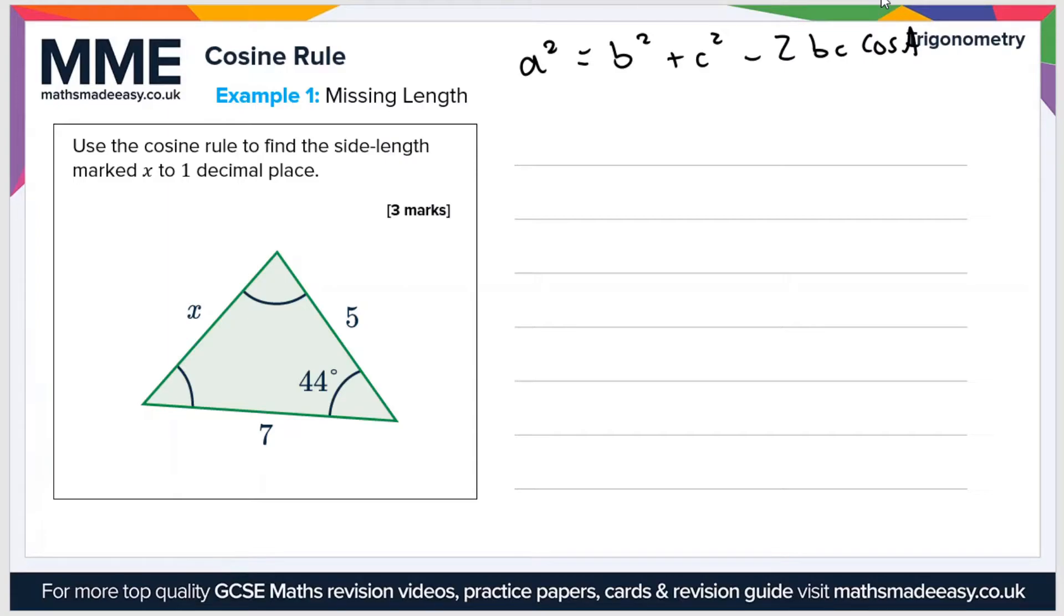So in this case a will be this angle 44 degrees and therefore the side length a will be the side that's opposite. So that's this side x. So a equals x in this case.